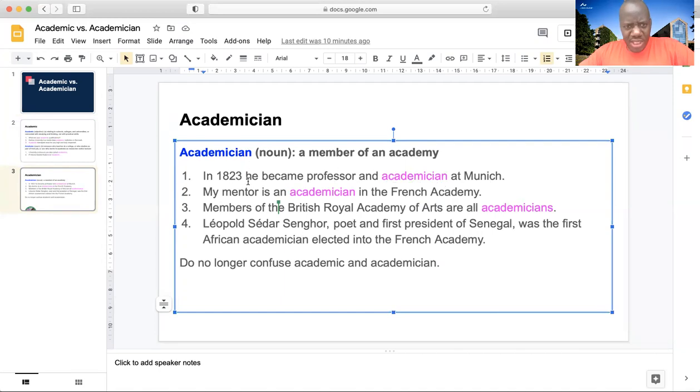You have to note here that he was a professor, which is different, and also an academician, because he belonged to an academy in Munich. So, do not think that this is saying the same thing. Actually, being a professor is one thing, and being an academician was another thing, because he belonged to an academy,